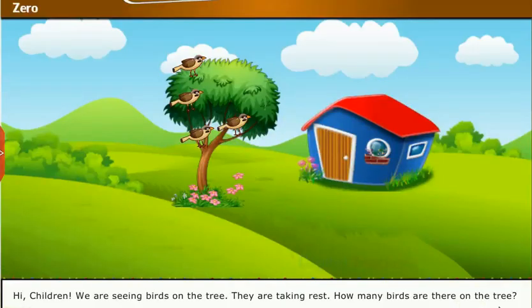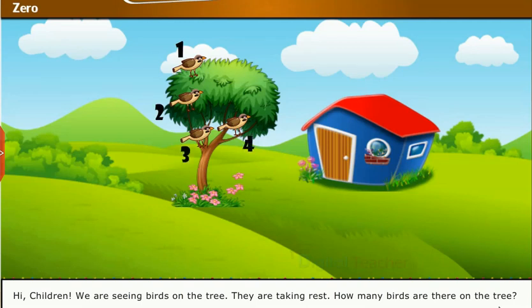Hi children, we are seeing birds on the tree. They are taking rest. First, how many birds are there on the tree? One, two, three, four. There are four birds on the tree.